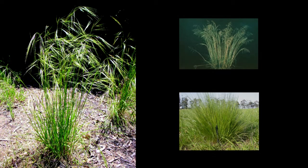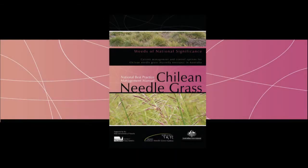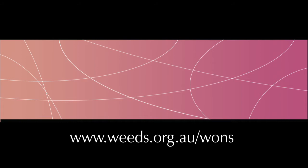CNG can be difficult to identify as it has similar characteristics to a number of native and introduced grasses. This DVD presentation details some of the features that may help you identify it and is designed to be used with the Chilean needle grass national best practice management manual, which can be viewed online or ordered from www.weeds.org.au/wons.